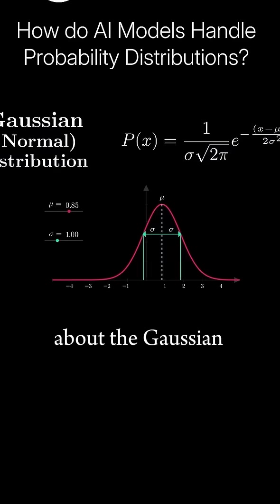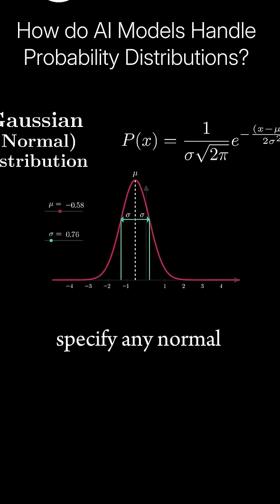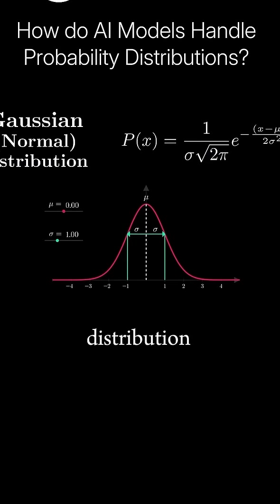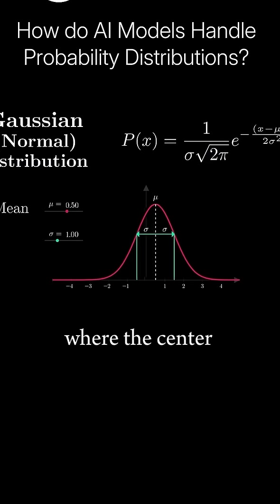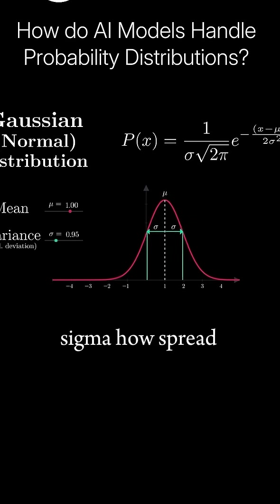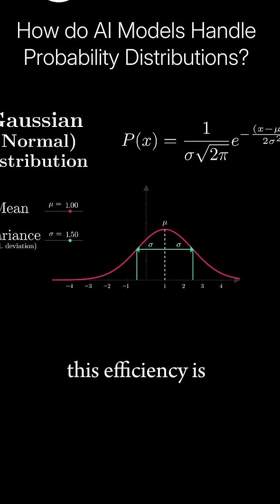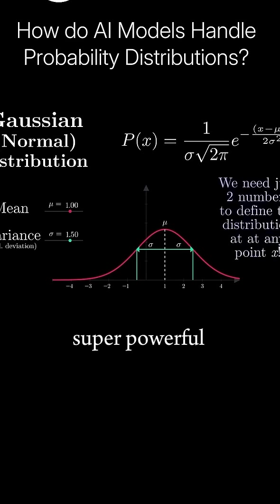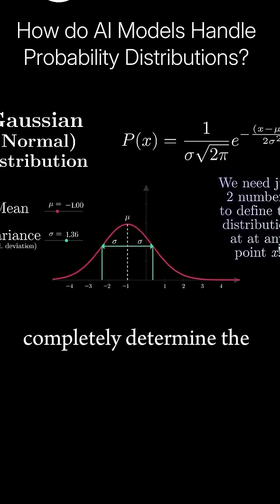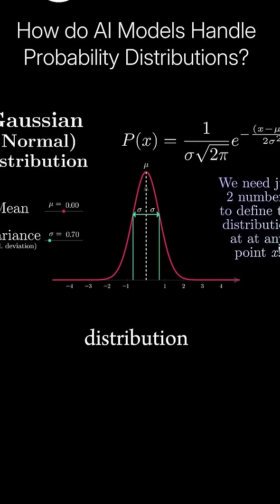What is remarkable about the Gaussian is that we can fully specify any normal distribution using just two parameters: the mean mu, where the center of the bell curve is, and the variance sigma, how spread out it is. This efficiency is super powerful. Just two numbers completely determine the entire probability distribution.